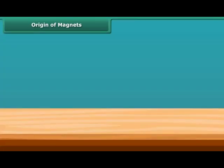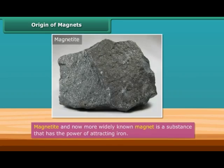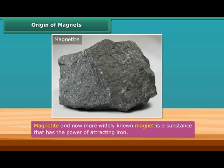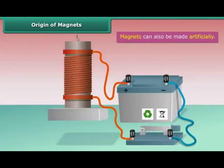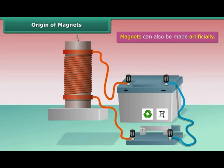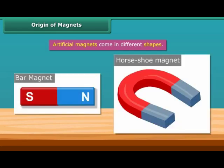Magnetite is a natural magnet and contains iron. In the later days, this was more widely known as a magnet. A magnet is a substance that has the power of attracting iron. Magnets can also be made artificially. However, the process of making artificial magnets is a recent discovery. Artificial magnets come in different shapes — for example, bar magnet, horseshoe magnet, etc.